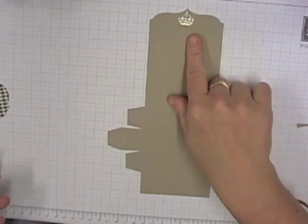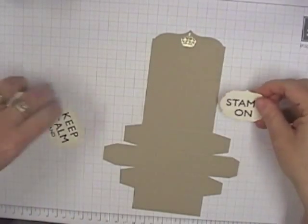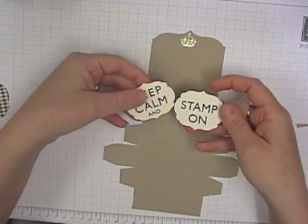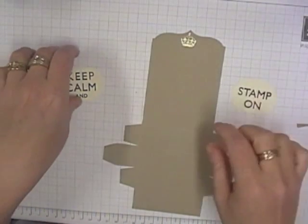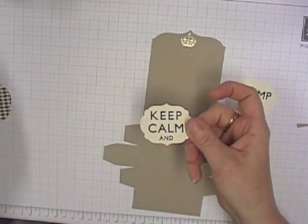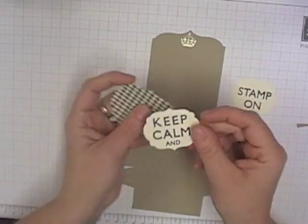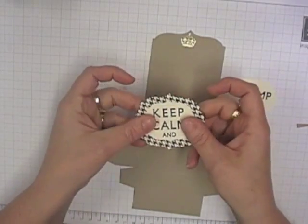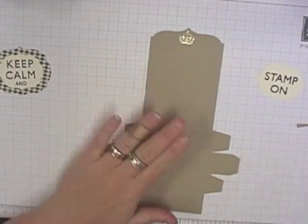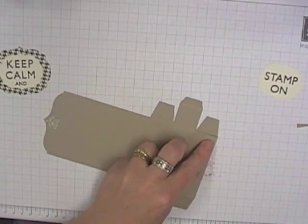So once you've done the cutting, your embossing, I've also just gone and stamped out Keep Calm and Stamp on. Added the smallest framelit to cut those ones out and the next one up for the matting on the one on the front. That's really pretty self-explanatory. What I really want to do is show you how to put this box together.